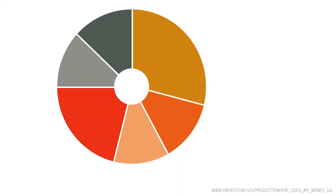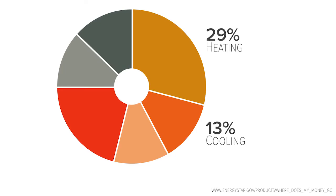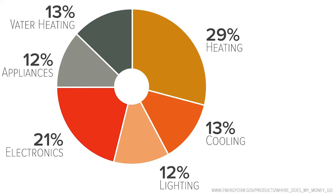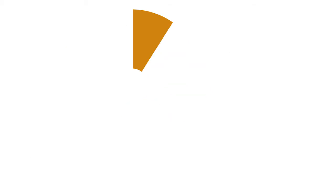The majority of energy consumed in your home comes from space heating, air conditioning, and miscellaneous electrical loads, such as lighting, electronics, and appliances. The following eight steps can significantly reduce the amount of energy these areas in your home consume.